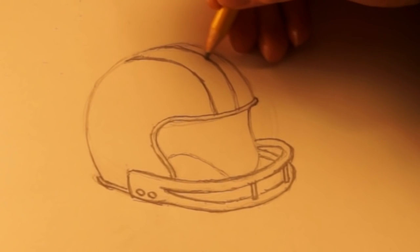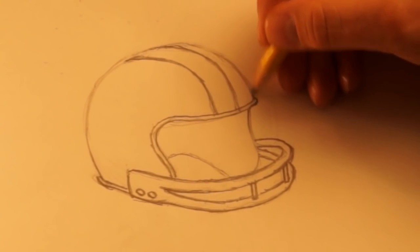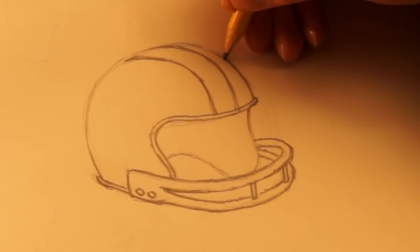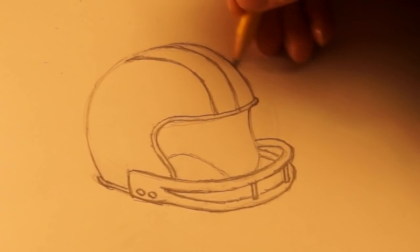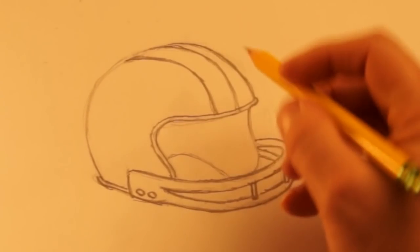After it's where you want it to be, then you make those lines darker. Also draw the edge, top edge of the helmet darker, all the way around.